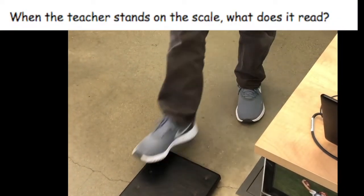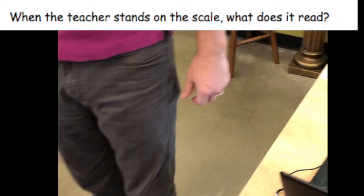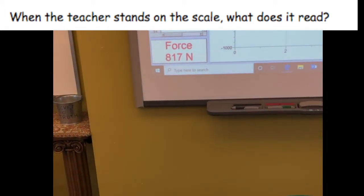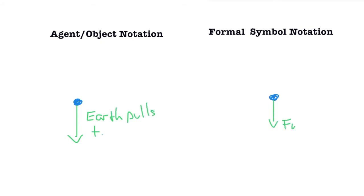For the first scenario, I will simply stand on the scale. What does my free body diagram look like in this situation? It's very simple. I'm only experiencing two forces. The earth is pulling me down and the scale is pushing me up. I'm not changing speed or direction, so the forces must cancel out.